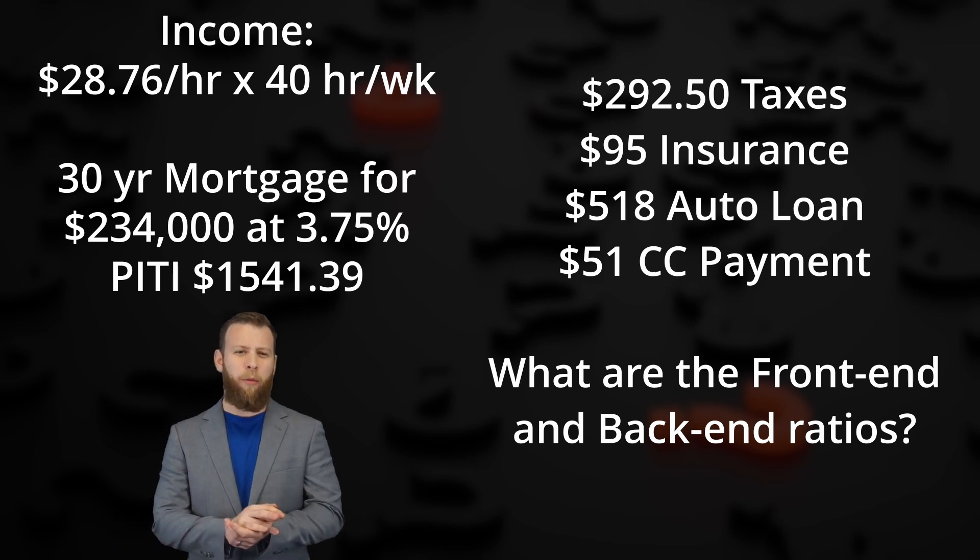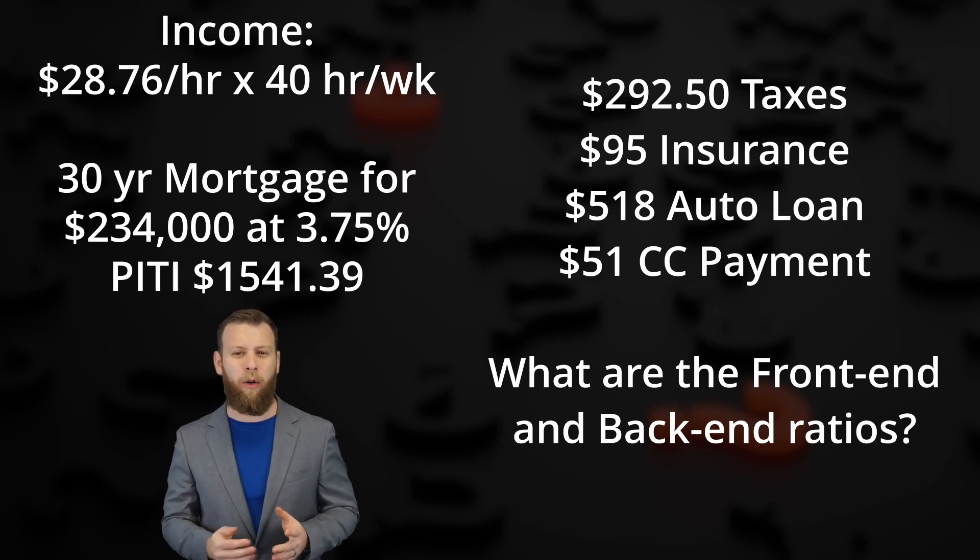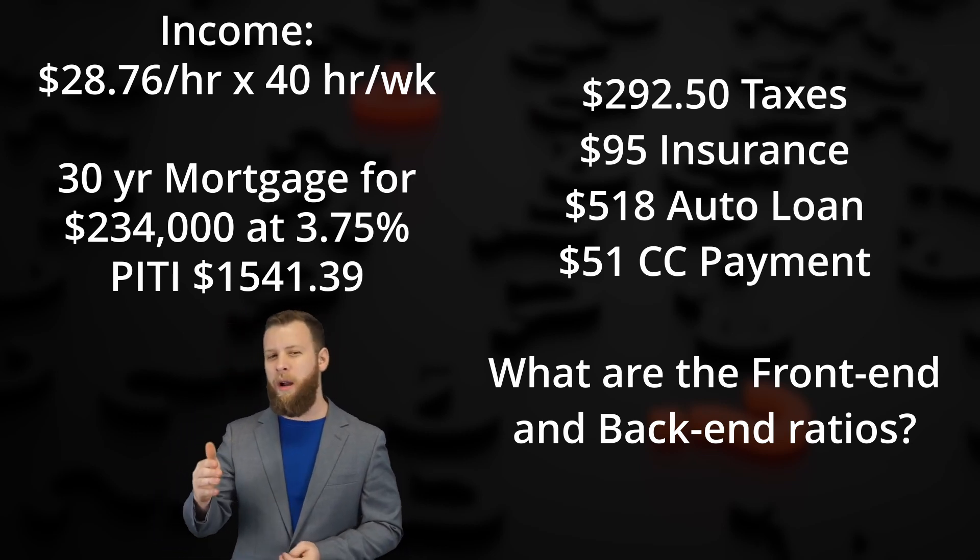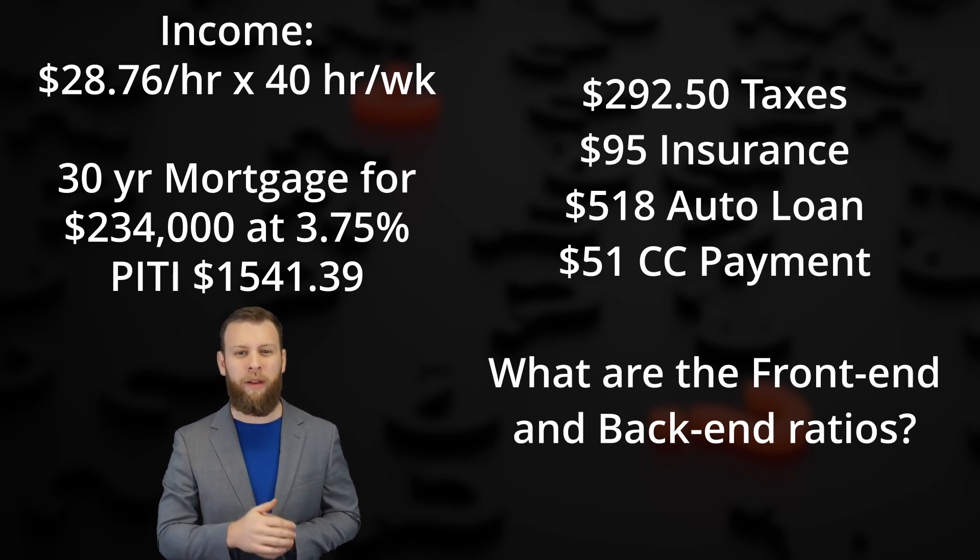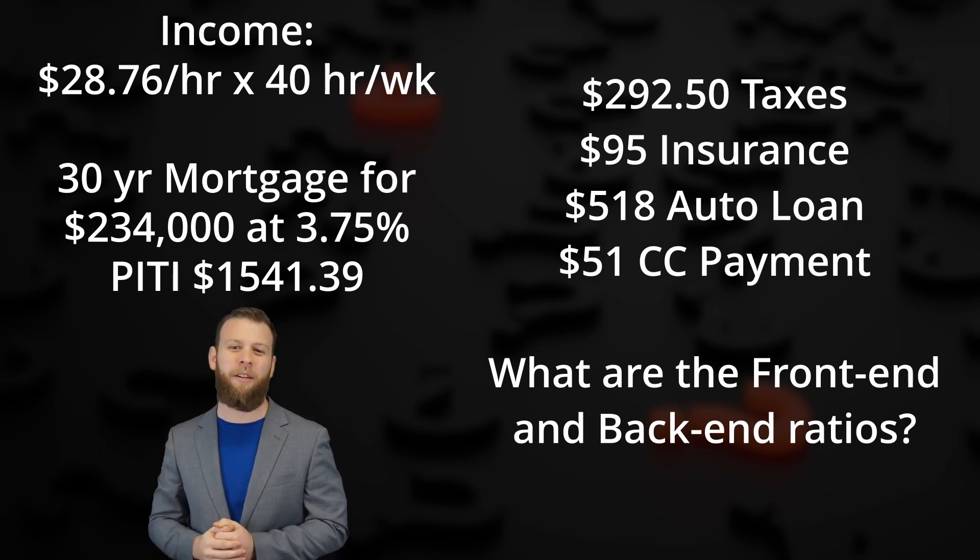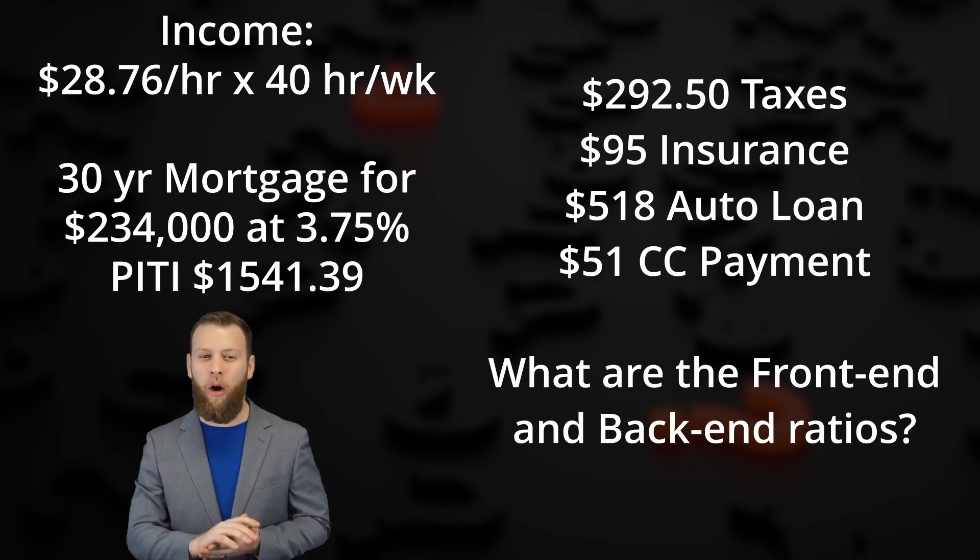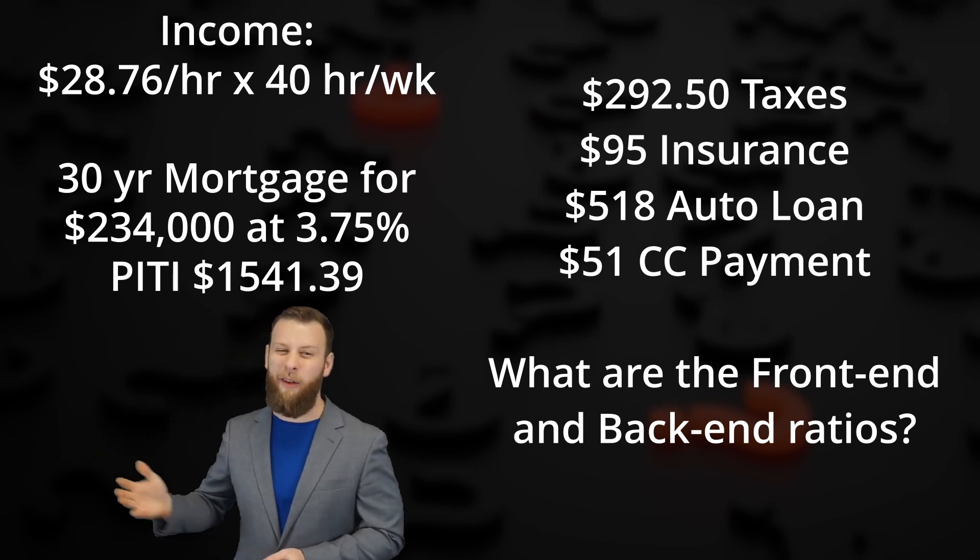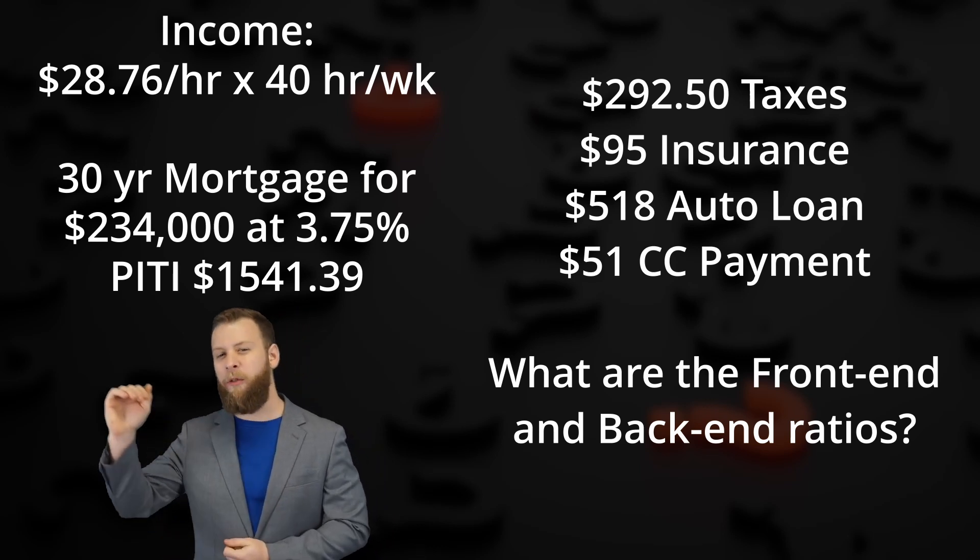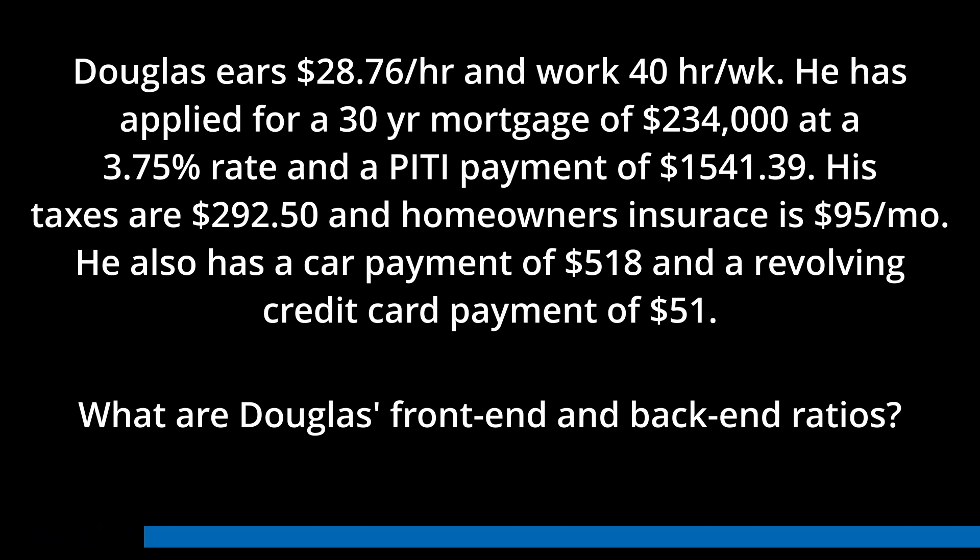Alright, for our third example, here we have Douglas who earns $28.76 an hour and works 40 hours per week. The borrower has applied for a 30 year mortgage of $234,000 at 3.75% with a PITI payment of $1,541.39. His taxes are $292.50 and his homeowner's insurance is $95 per month. The borrower has a car payment of $518 and a revolving credit card payment of $51. What is Douglas' front end and back end ratio? Again, here's your chance to pause the video and finish this on your own.